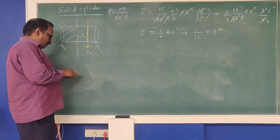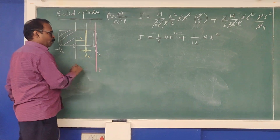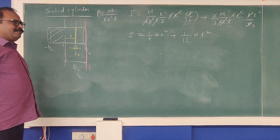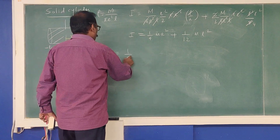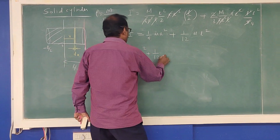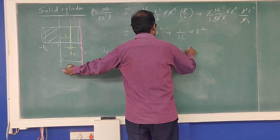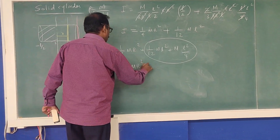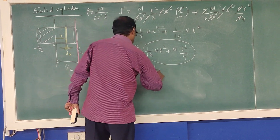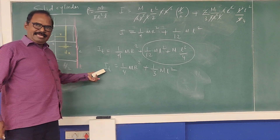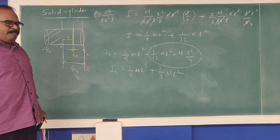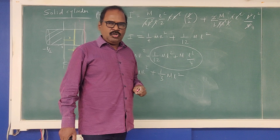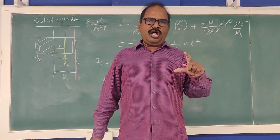About a tangential axis parallel to the diameter: using the parallel axis theorem, I_tangent = I_diameter + M·d². The distance d from the center to the tangent is R, so I_tangent = ¼MR² + 1/12 ML² + MR².